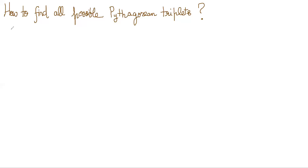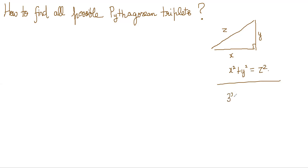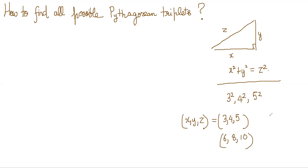In this video lecture we'll look at a method to find all possible Pythagorean triplets. Everyone is aware of Pythagoras' theorem: in any right-angle triangle, if x and y are the base and perpendicular and z is the hypotenuse, then x² + y² = z². Numbers like 3, 4, 5 are a typical Pythagorean triplet, as are 6, 8, 10 and 5, 12, 13. We want to find a method to find all such Pythagorean triplets.